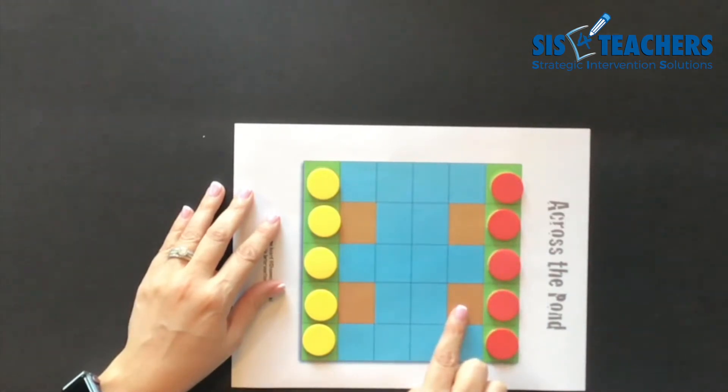You cannot go on the logs. In this game, you cannot hop over any of the frogs and you can't stack your frogs on top of each other.